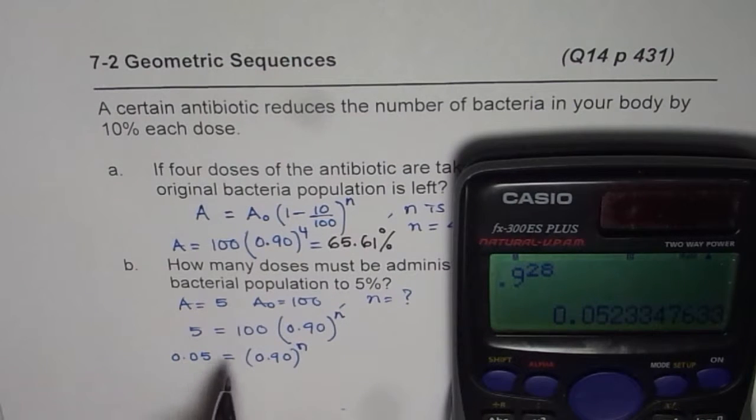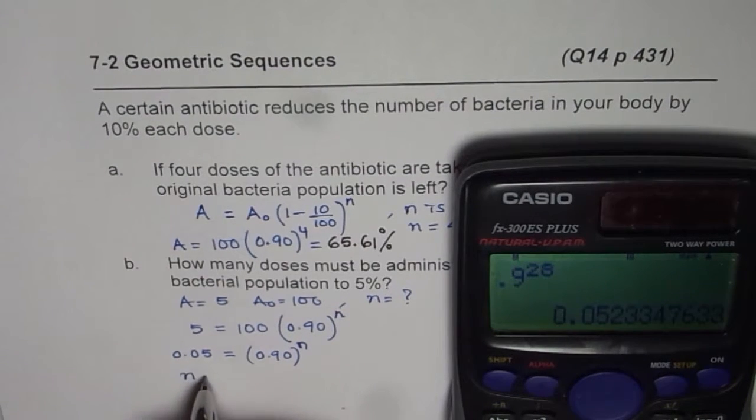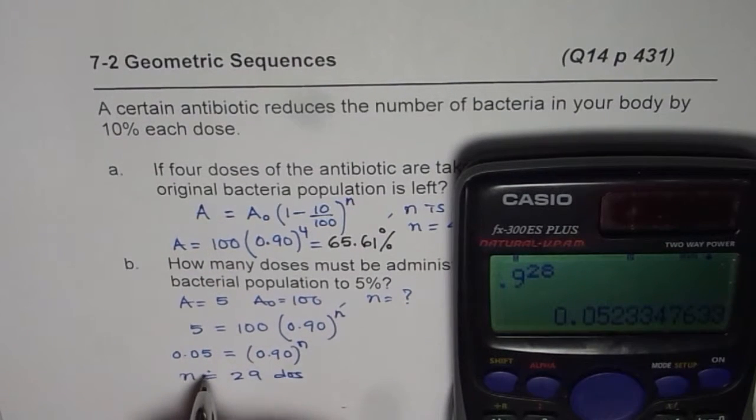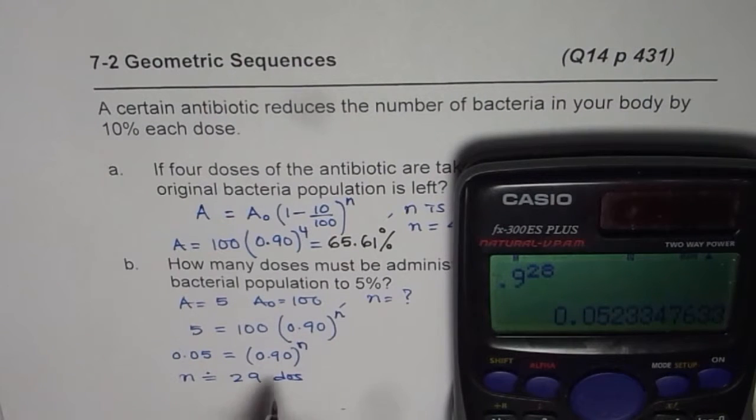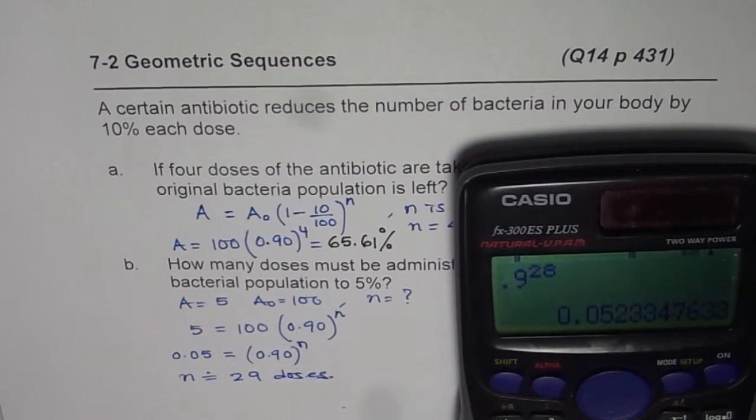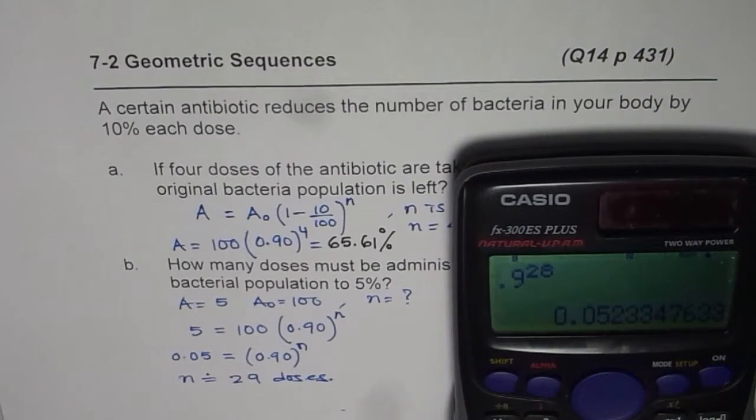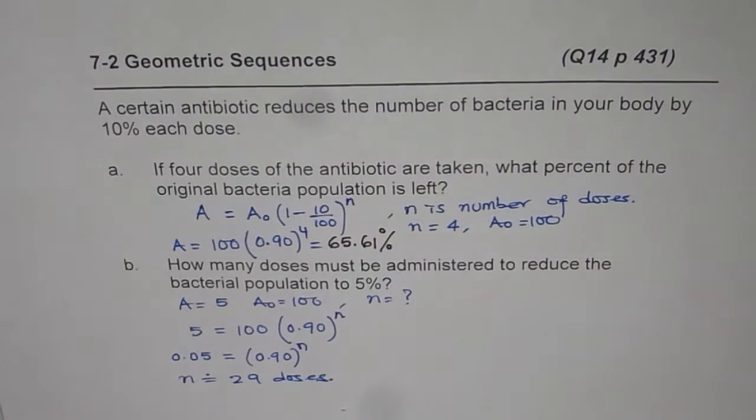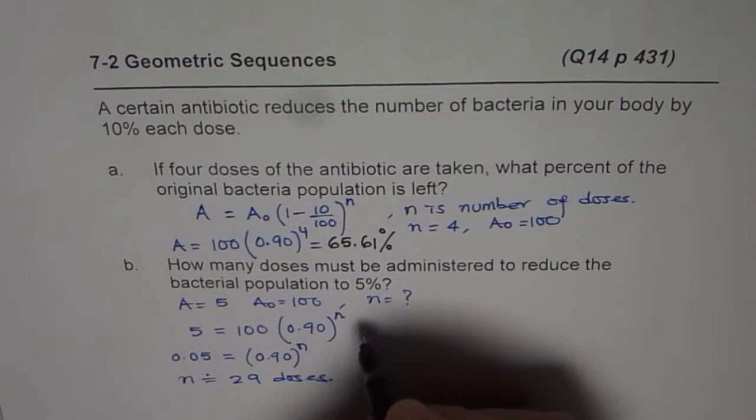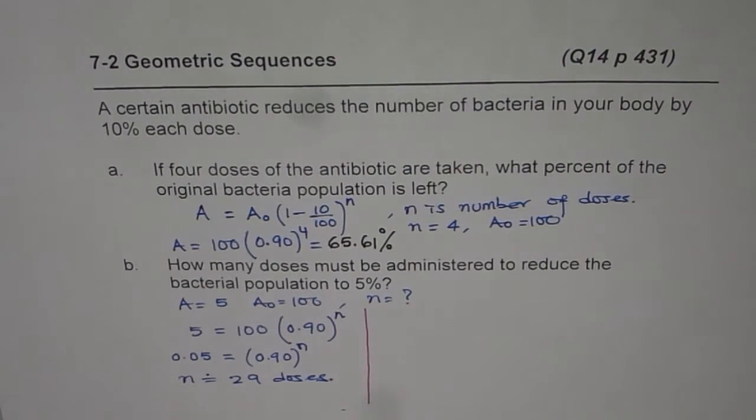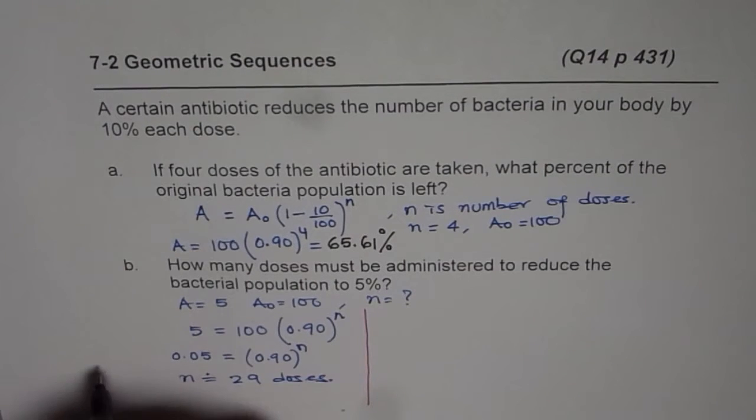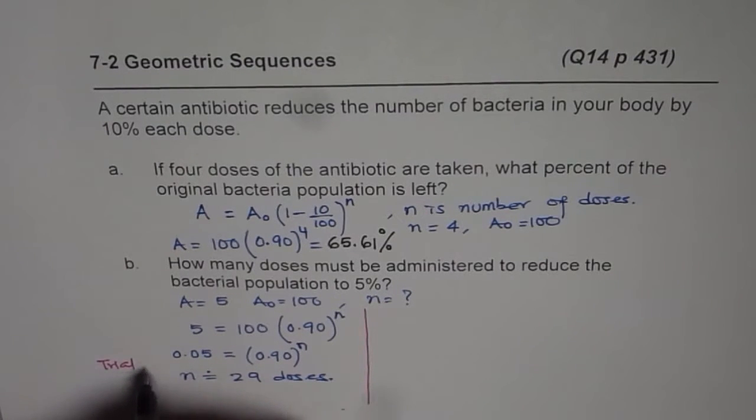But the thing is 0.052 is more than 5 percent. Since n equals 28 gives me more than 5 percent, I can say n is approximately equal to 29 doses. I should not say approximately because I know now 29 doses. So you can do this trial and error method. The other method is use log, which we are going to understand.